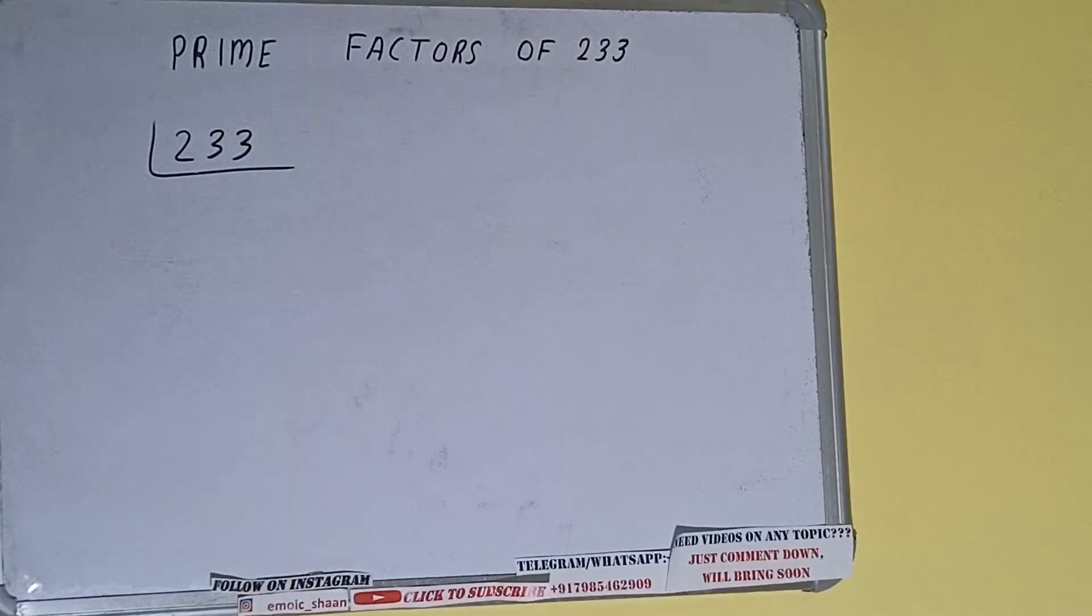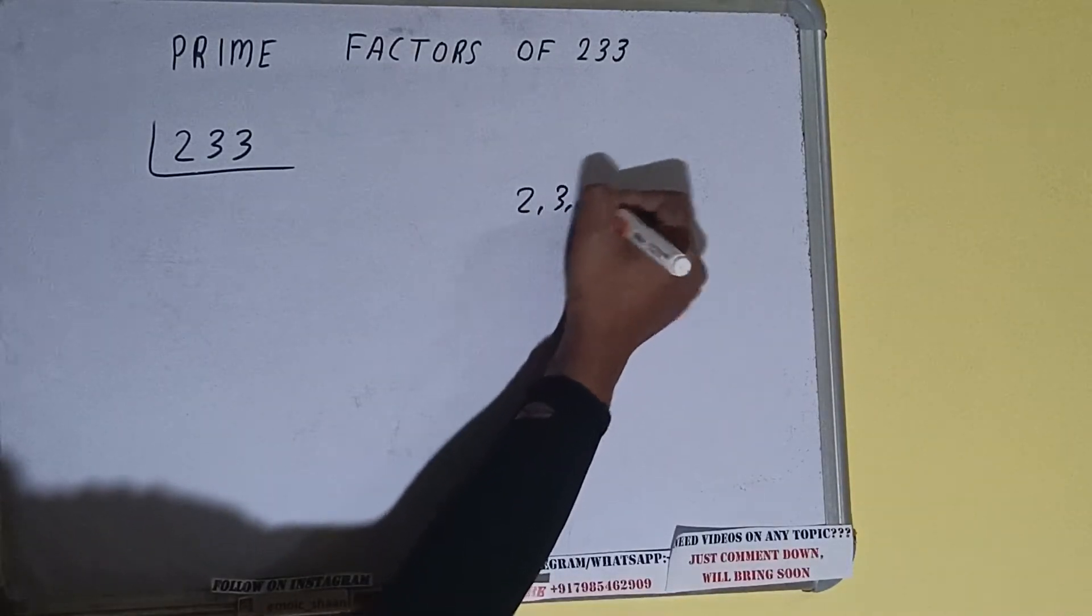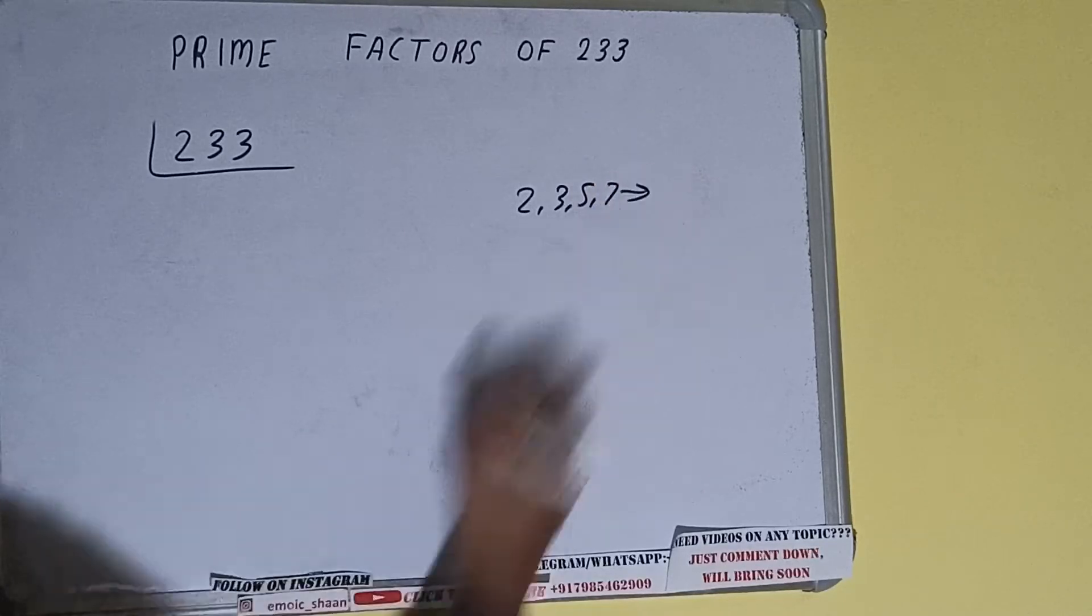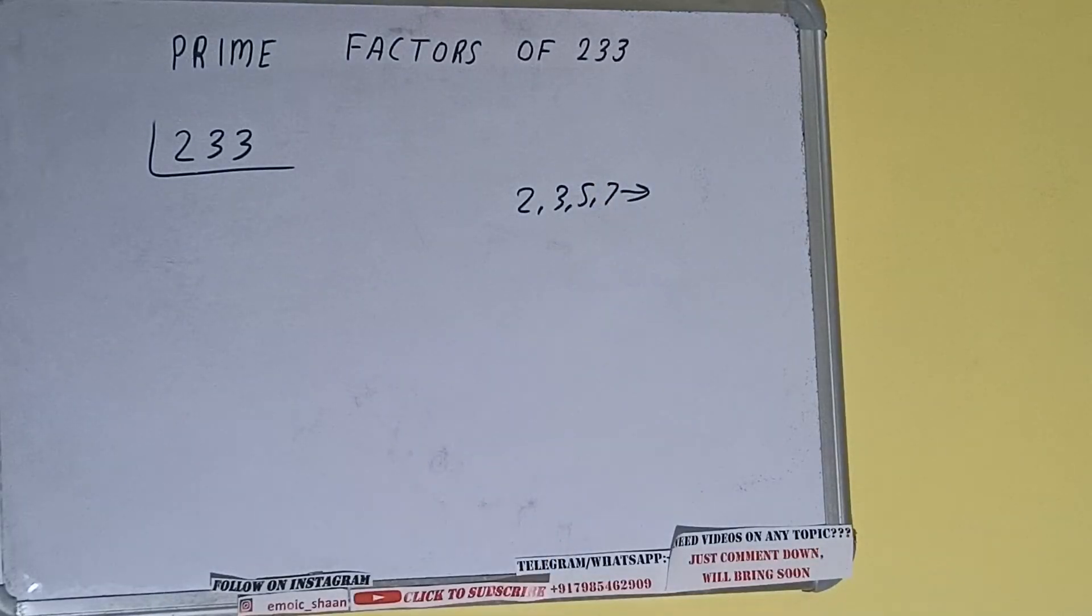The next thing we need to know about is what are prime numbers. So prime numbers are numbers that are divisible by one and the number itself, like 2, 3, 5, 7, and so on.